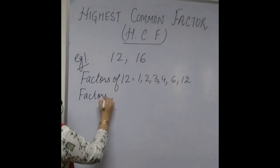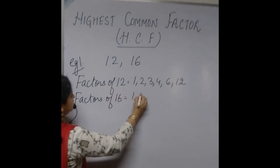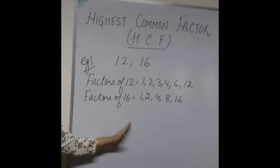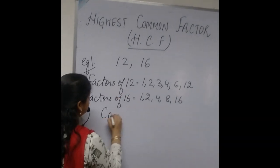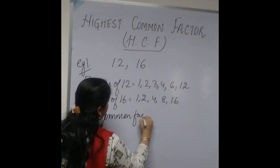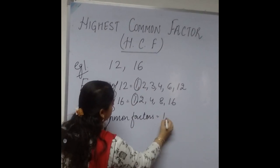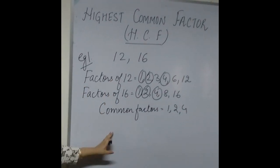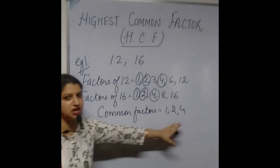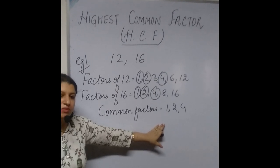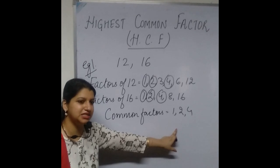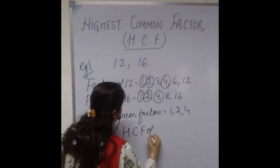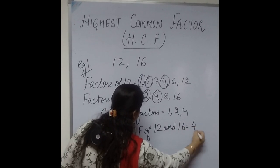Then we have to write the factors of 16, and the factors of 16 are 1, 2, 4, 8, and 16. Now if you find the common factors between the factors of 12 and 16, we find that the common factors are 1, 2, and 4. These are the common factors of 12 and 16. Now the last step — if we take the highest among all these common factors, that will become the HCF. The highest common factor among these three numbers is clearly 4. Therefore, HCF of 12 and 16 is equal to 4.